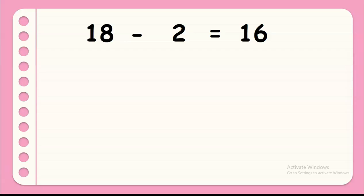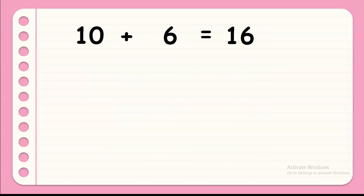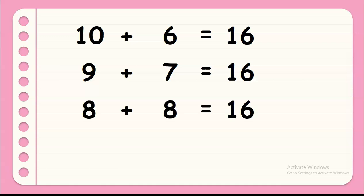Now, we have also 18 minus 2 equals 16, 19 minus 3 equals 16, 20 minus 4 equals 16, and 21 minus 5 equals 16. So, these are all possible subtraction sentences as equivalent expressions compared with 10 plus 6 equals 16, 9 plus 7 equals 16, 8 plus 8 equals 16, and 7 plus 9 equals 16.